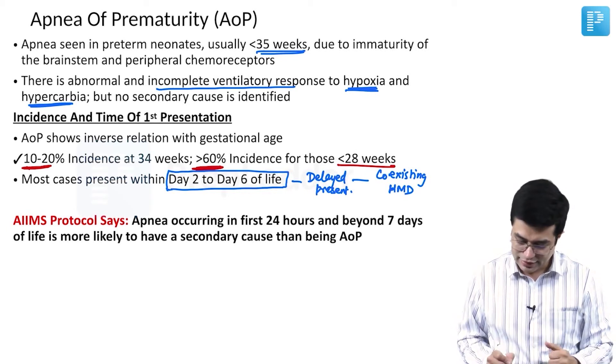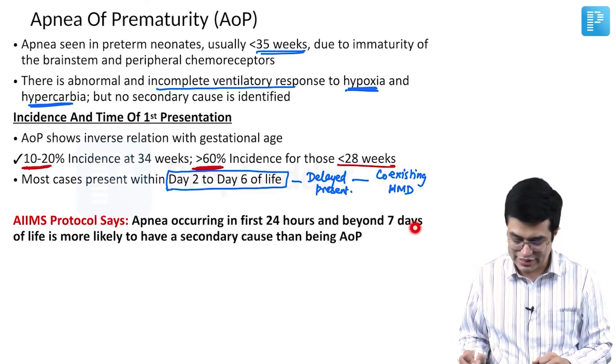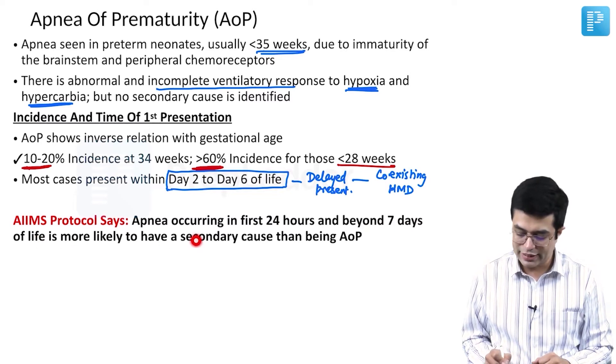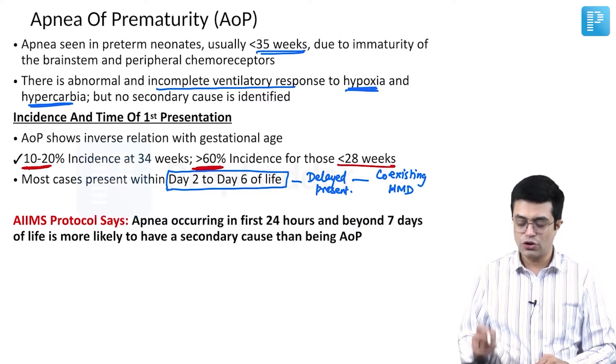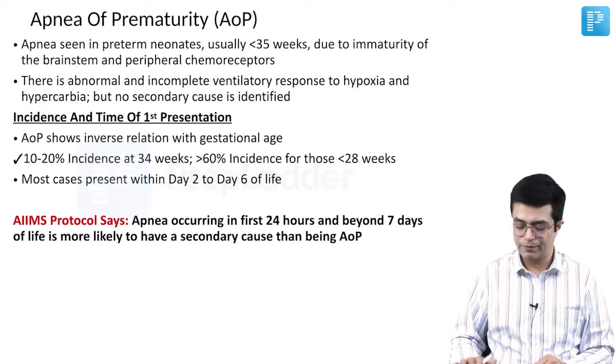The EAMS protocol states that apnea occurring in the first 24 hours and beyond 7 days of life is more likely to have a secondary cause than being apnea of prematurity.